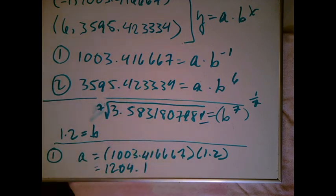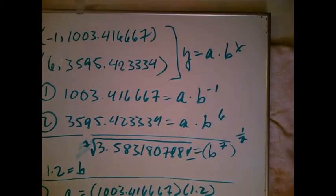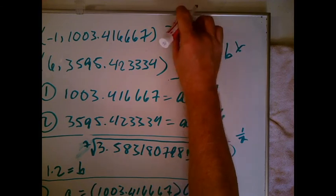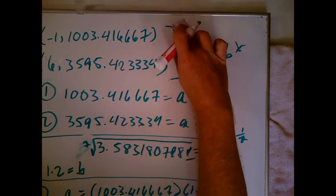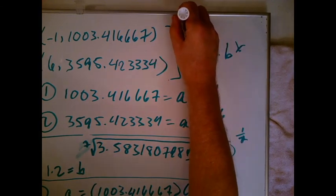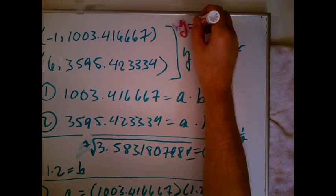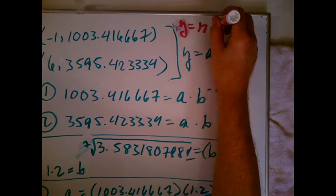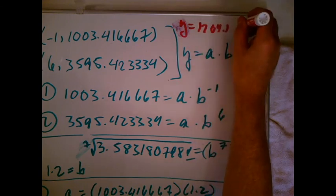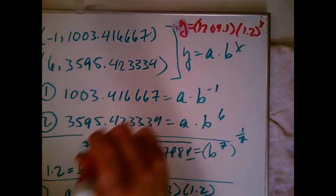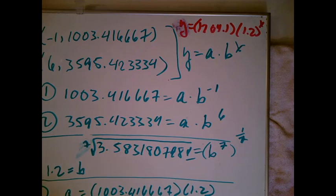Let's put our little conclusion. I'm going to write down that y equals a, which is 1204.1 times 1.2 to the x. And we're all done.